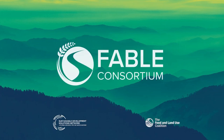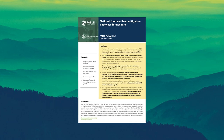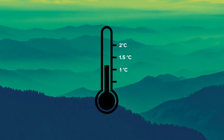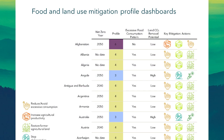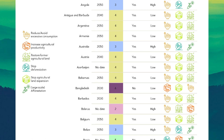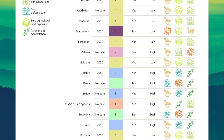The Food, Agriculture, Biodiversity, Land Use and Energy Consortium, or FABLE, is the author of the brief on National Food and Land Mitigation Pathways for Net Zero. The brief highlights how countries' food and land use systems can contribute to net zero targets and hold global warming below 2 degrees Celsius. It classifies countries into six profiles in order to identify priority actions in their food and land use systems according to their specific context.